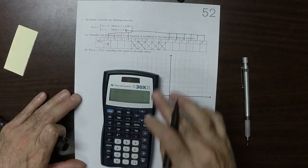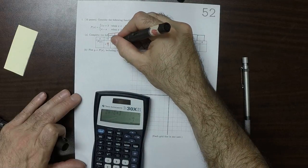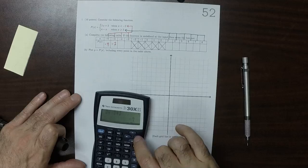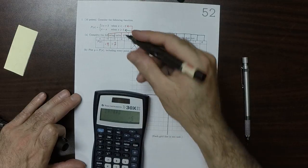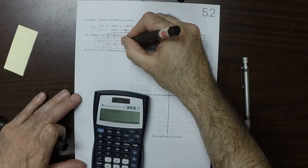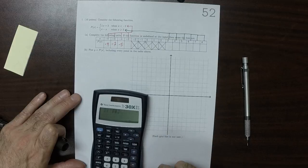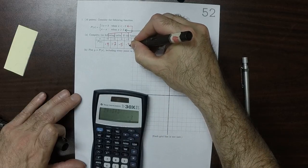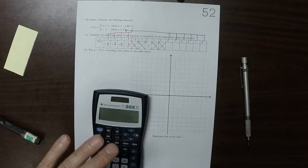Times negative 5, that's negative 7. Times negative 4, that's negative 5. Negative 3, that's negative 3. So that's all the red points.